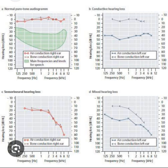Otosclerosis occurs due to abnormal growth of the bone surrounding the cochlea, which can lead to fixation of the stapes to the oval window. It commonly causes conductive hearing loss but may progress to mixed hearing loss. A classic feature known as Carhart's notch may also be present, represented by a worsening in bone conduction hearing of 10 to 15 dB HL at 2000 Hz, sometimes accompanied by an apparent improvement of the air conduction threshold at that frequency.